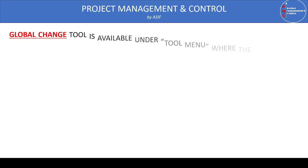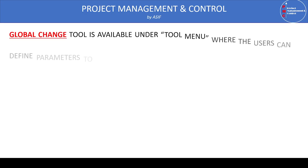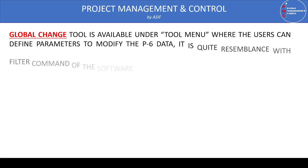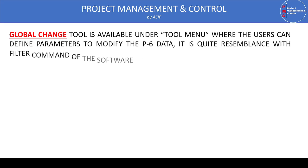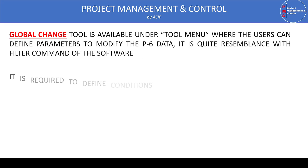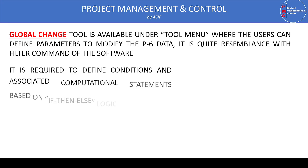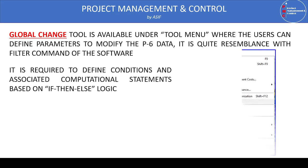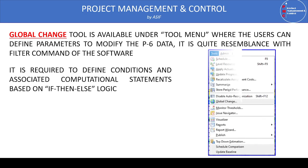Now we'll see how we can access Global Change in Primavera. The Global Change command is available in the Tools menu. When we click on the Tools menu, a dropdown will appear, and in that dropdown there is Global Change.